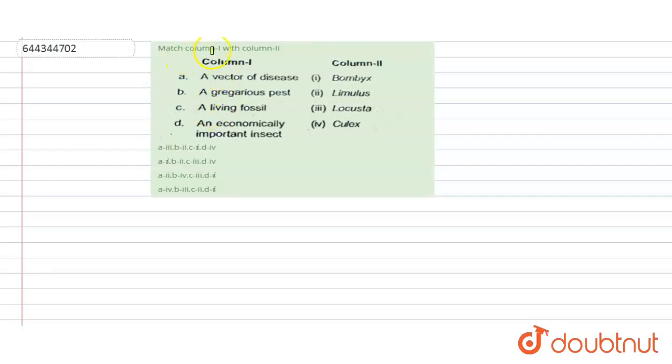Hello students, have a look at the question. The question is match Column 1 with Column 2. Column 1 is: a vector of disease, agrarious pests, living fossil, and economically important insects. Column 2 is: Bombyx, Limulus, Locust, and Culex.